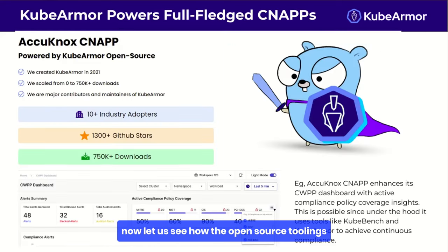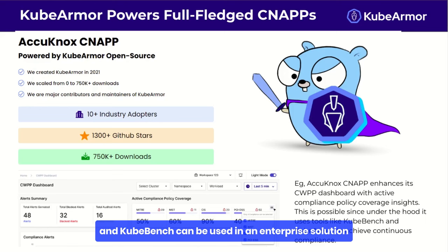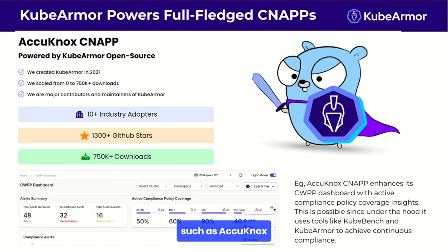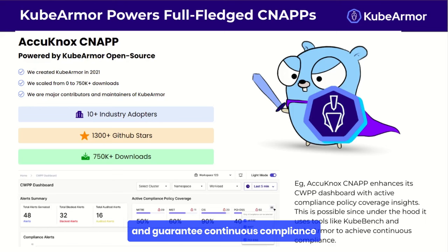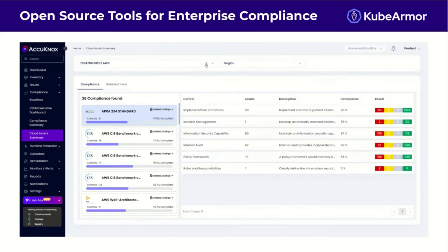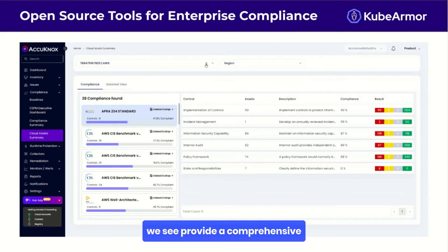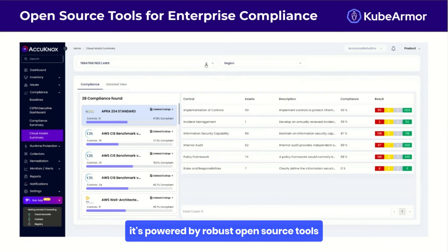Now let's see how open source tools like KubeArmor, KubeScape, and KubeBench can be used in an enterprise solution such as Akinox to deliver end-to-end runtime security and guarantee continuous compliance. The dashboard provides a comprehensive view of compliance across multiple standards, powered by robust open source tools working behind the scenes.